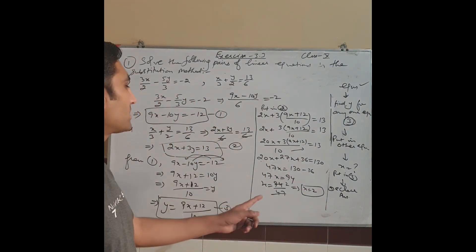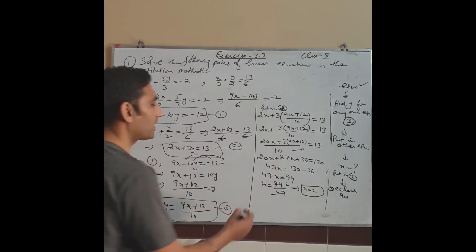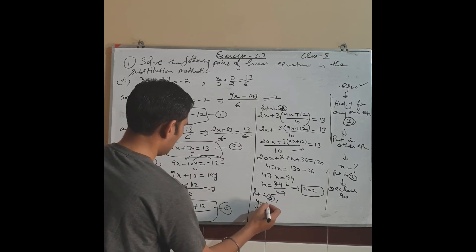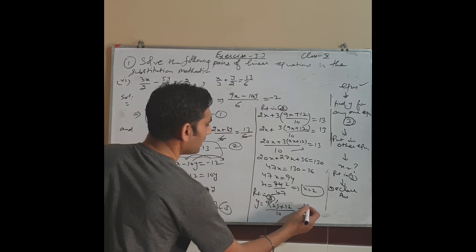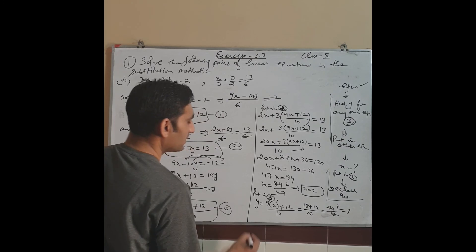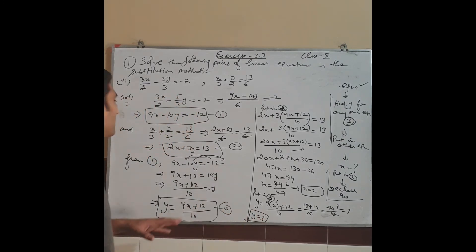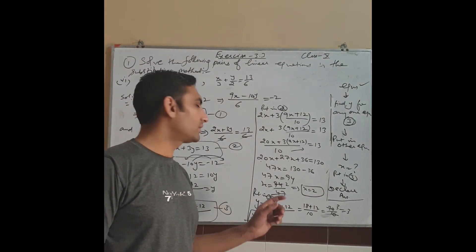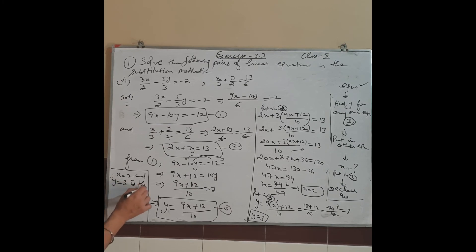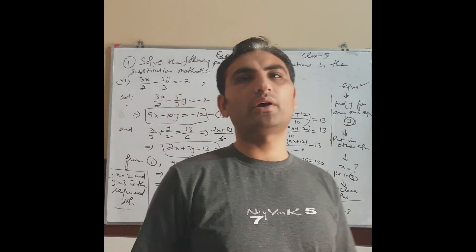We have x = 2. Put into equation 3: y = (9×2 + 12)/10 = (18 + 12)/10 = 30/10 = 3. So y = 3. Therefore x = 2 and y = 3 is the required solution. All these parts are important for examination — don't leave them.